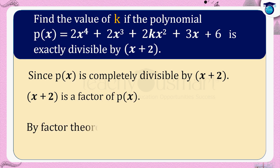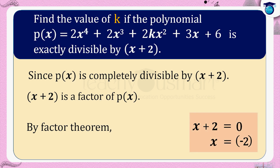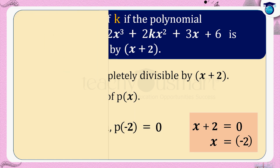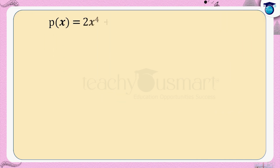Hence, by the factor theorem, p(−2) = 0. We have p(x) = 2x⁴ + 2x³ + 2kx² + 3x + 6, so we set p(−2) = 0.